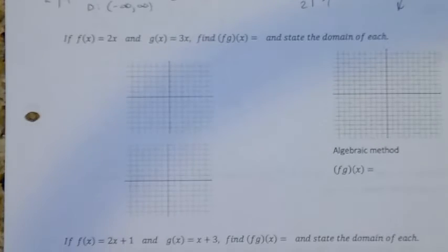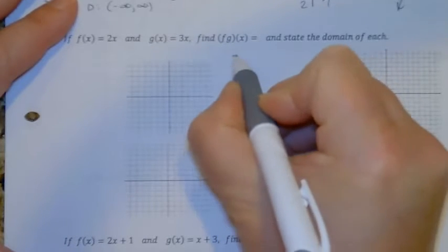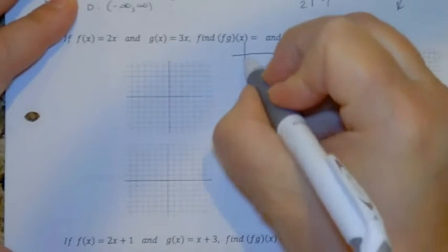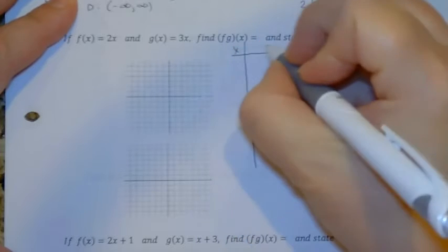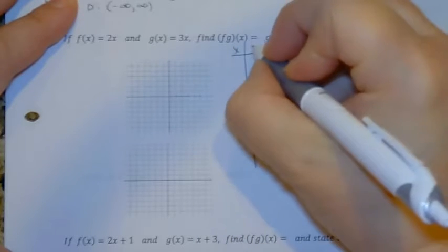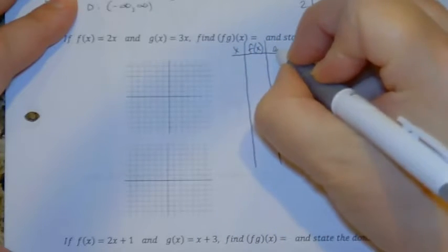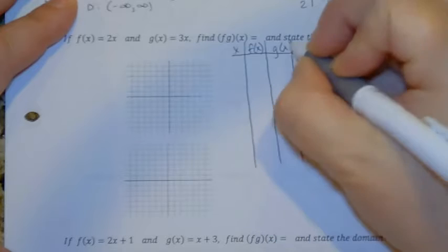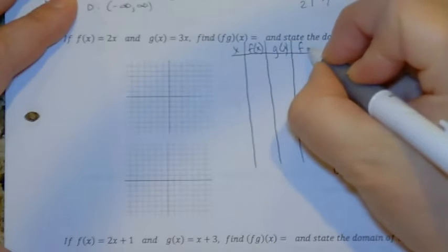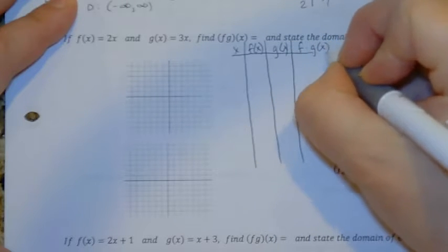Alright, so let's try one where we multiply. I'm going to try to see if I can put this all on one table. I'm going to have my x column, my f of x column, my g of x column, and then my f times g of x column.